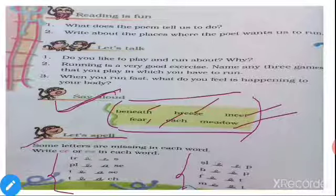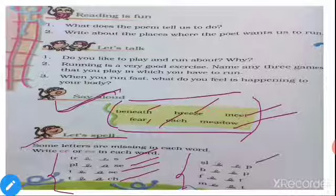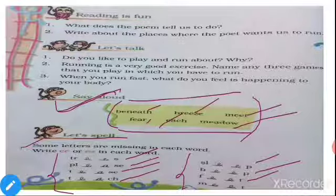Next, 'Let's Spell'. Some letters are missing in each word. You need to write E-E or E-A in each word. There are empty spaces you have to fill. For example: Trees — double E; Please — E and A; Tease — E and A; Teach — E and A; Sleep — double E; Beep — double E; Feed — double E; Meet — double E. You have to fill in the page like this.